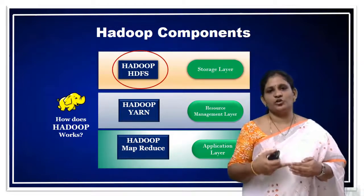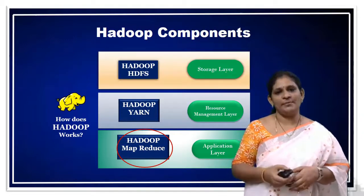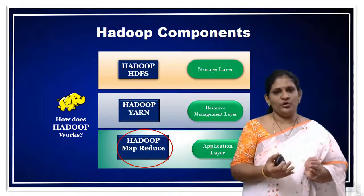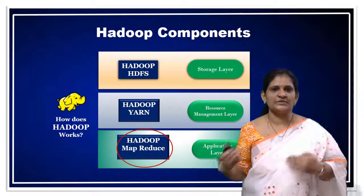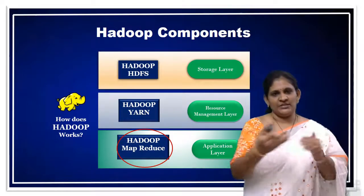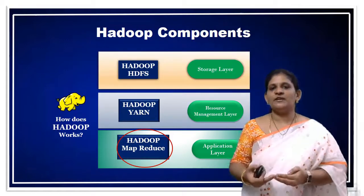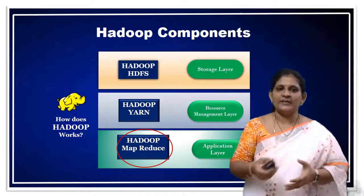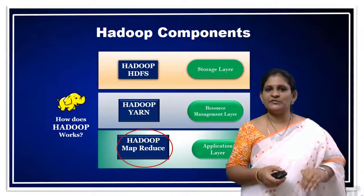After storing, I am going to process those documents. To process those documents, I will be using a programming model called MapReduce. I have to write a logic or code to process it, and I am going to write that by using MapReduce — an MR program or MR job. I have stored the data using HDFS, and I am going to process that data by writing code in the MapReduce programming model. This MapReduce program will process the data present in HDFS, that is the 1 lakh text documents, and gives back the result.